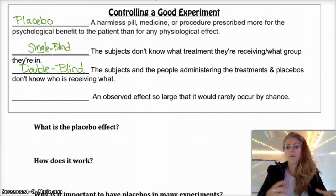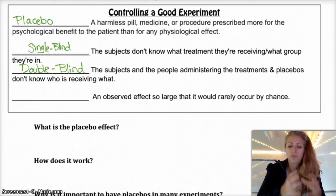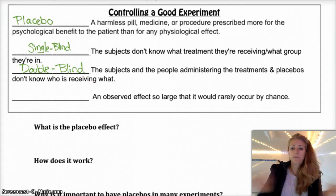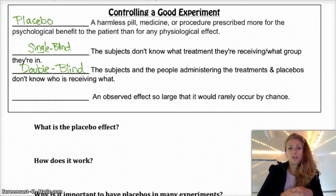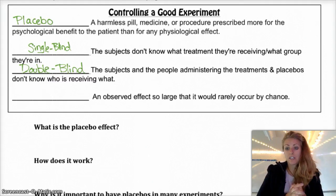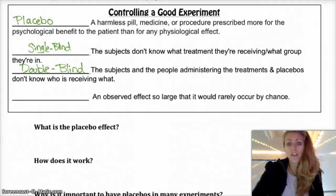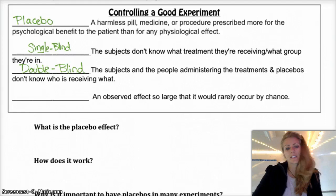What we want to do is determine whether the results we have are likely to happen by random chance or not. Later in the year we'll talk about how to determine that probability — what is the probability that you would get these results or anything more extreme just by random chance. If the observed effect is so significant and so big that it rarely occurs by chance, we would call that statistically significant.